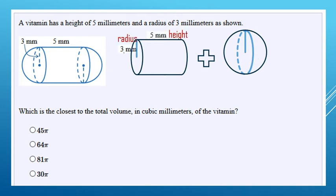Taking it in parts, we're going to start with a cylinder. Radius is 3 millimeters, 5 millimeters for the height. Looking at the formula, volume equals pi, radius squared times height. Let's go ahead and fill in the r and the h, 3 squared and 5.